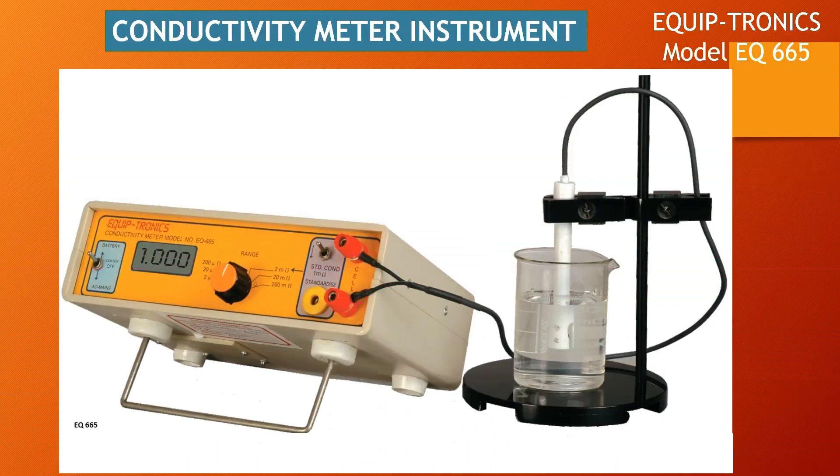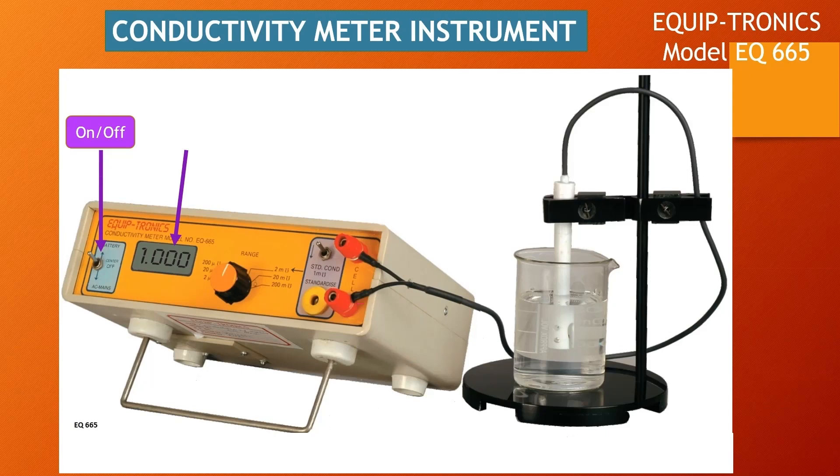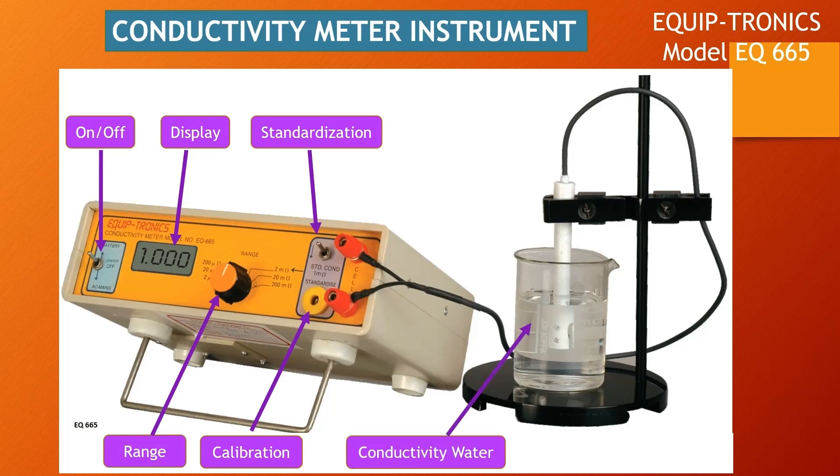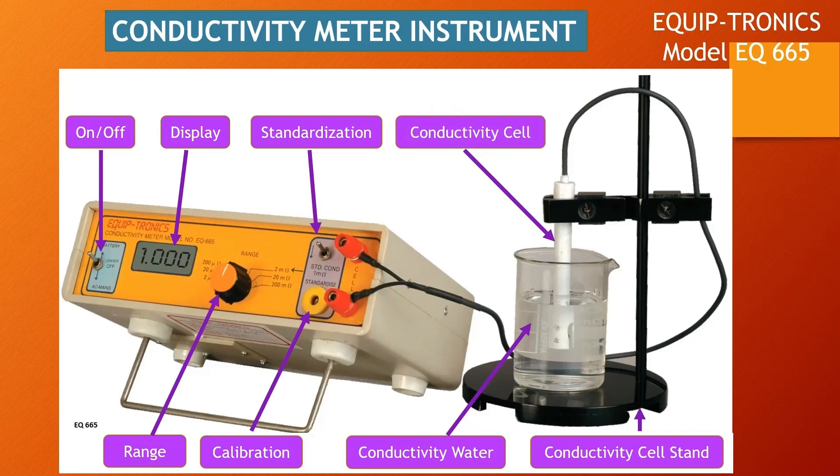The Digital Conductivity Meter has an On-Off Knob, Display, Standardization Knob, Calibration Knob, and Range Knob. You also need a beaker containing conductivity water, an electrode stand, and a conductivity cell.